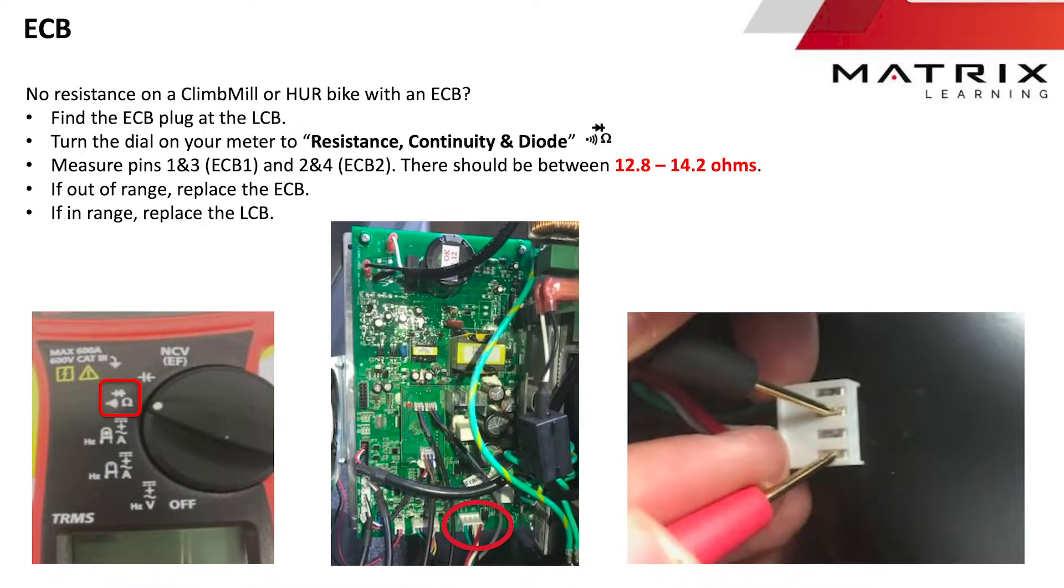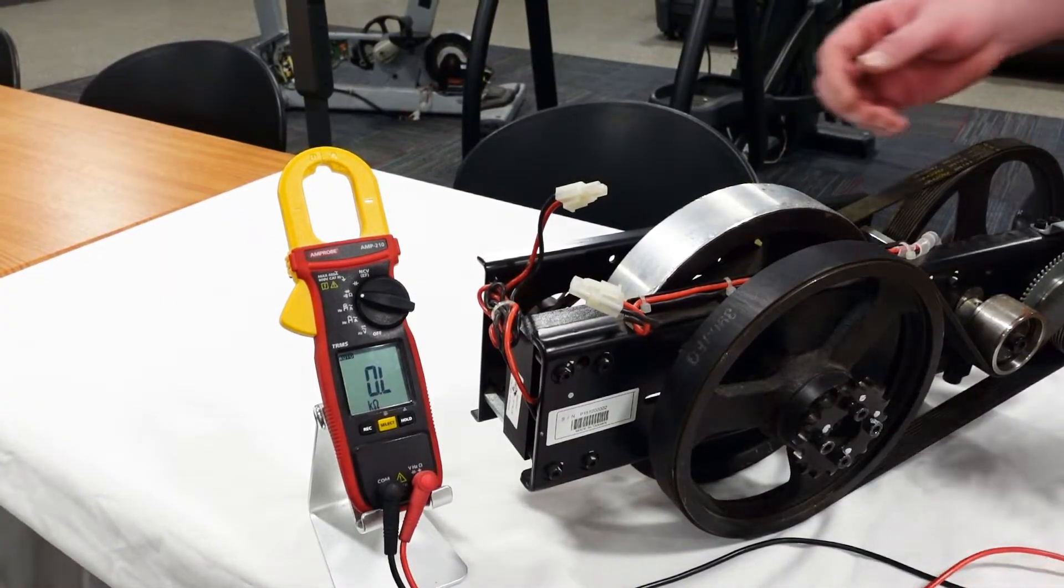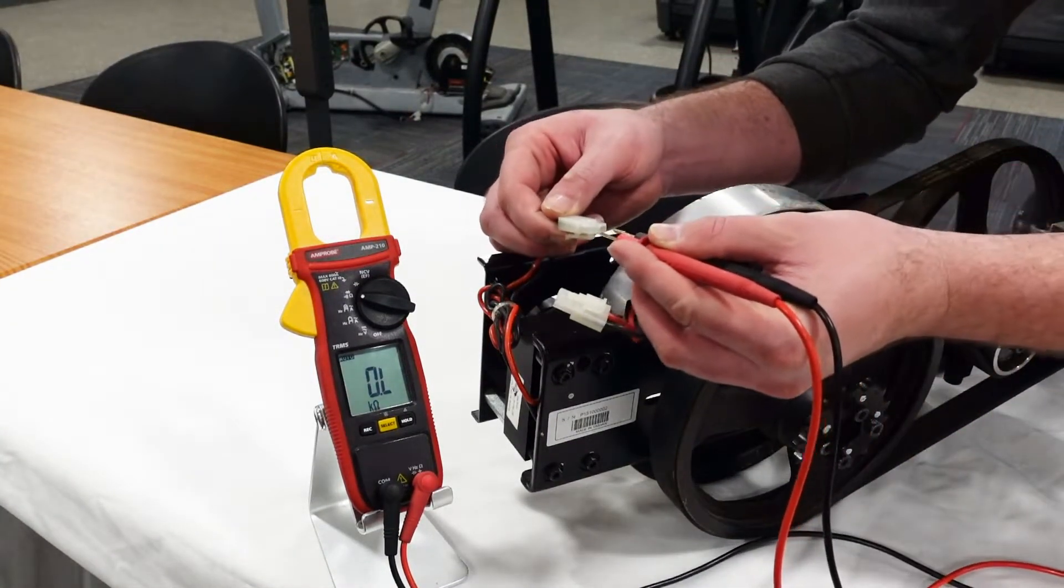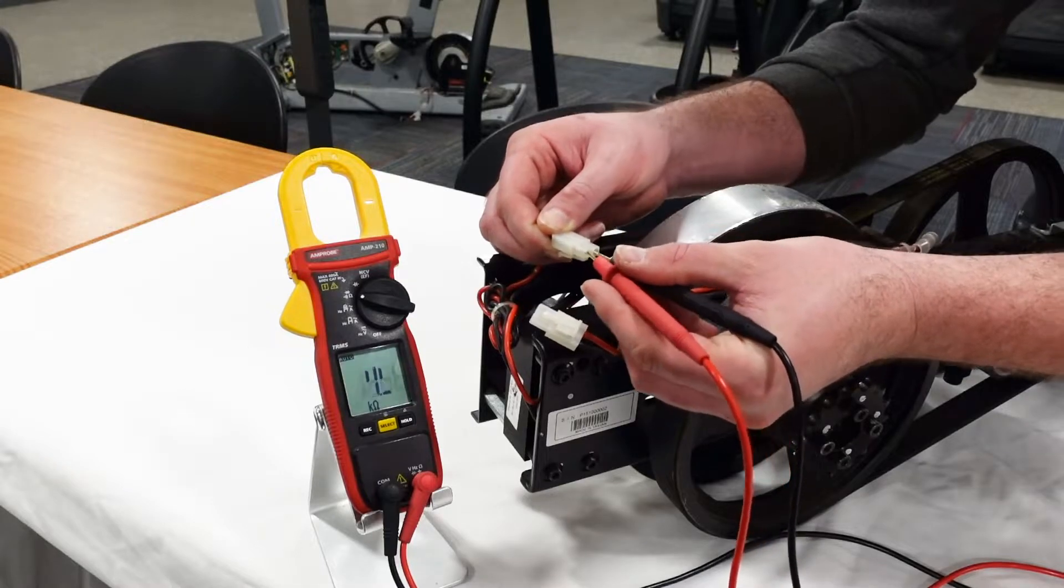Our climb mills use eddy current brakes, also known as ECB, which can be tested by checking for approximately 12 to 14 ohms across each of the two coils.